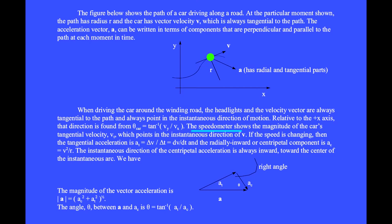The speedometer shows the magnitude of the car's tangential velocity, v sub t or just v, which points in the instantaneous direction of vector v. If the speed is changing, then the tangential acceleration is a sub t equals delta v over delta t, or the calculus derivative dv/dt. And the radially inward or centripetal component is a sub c equals v squared over r.